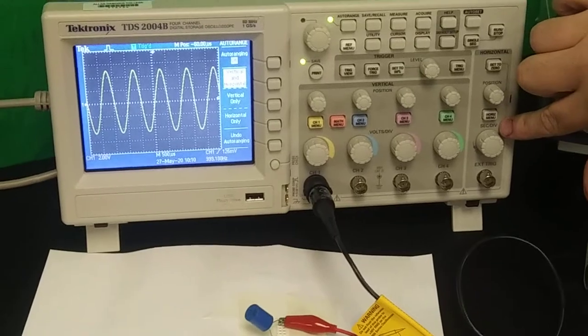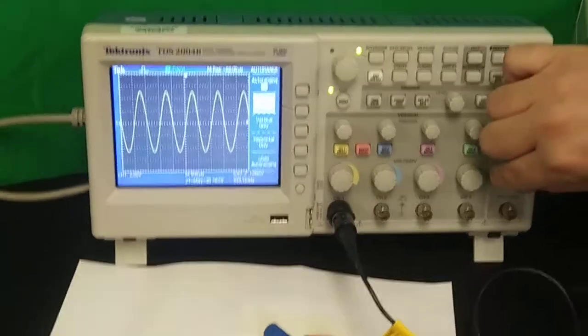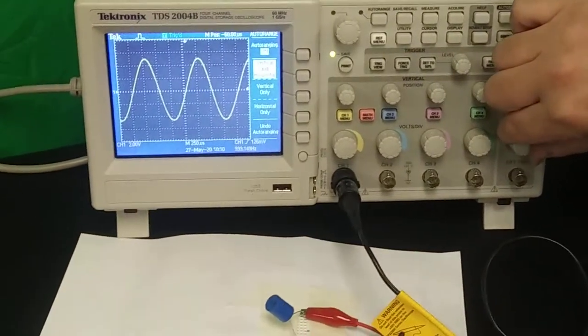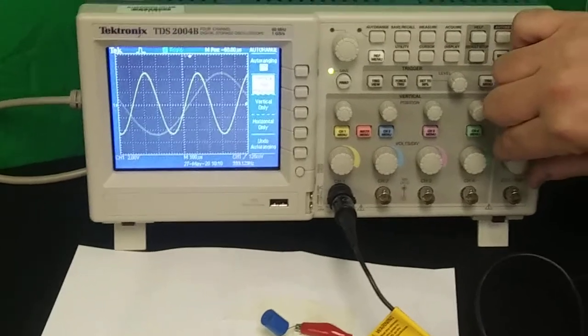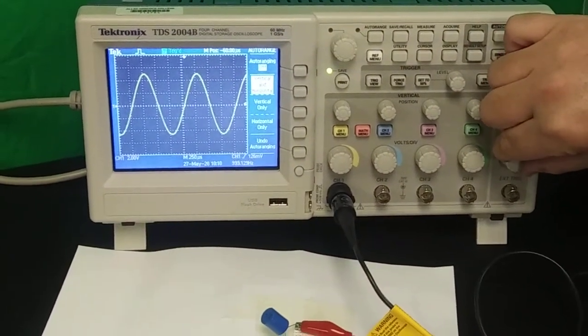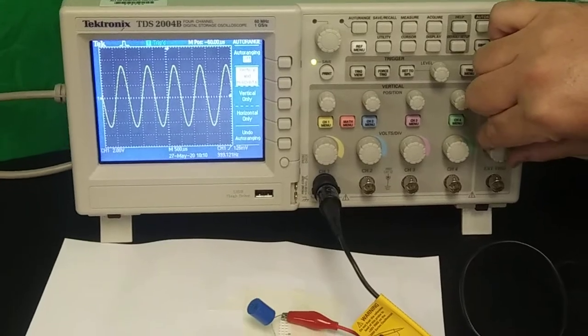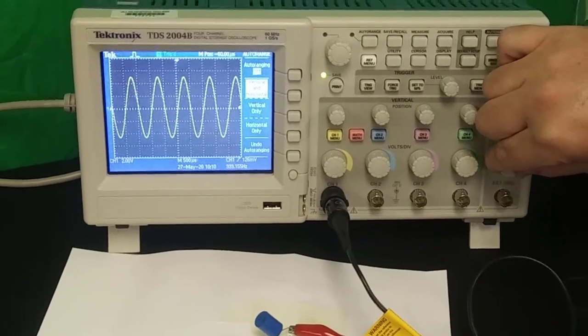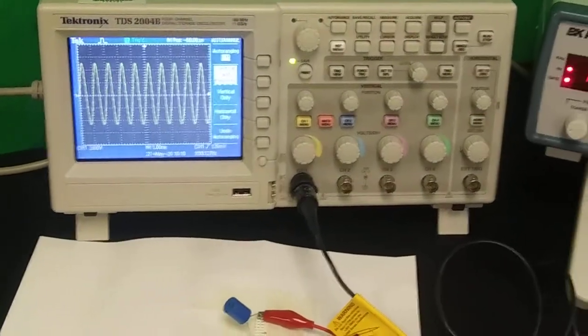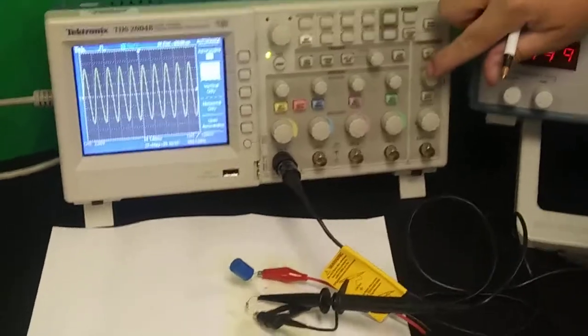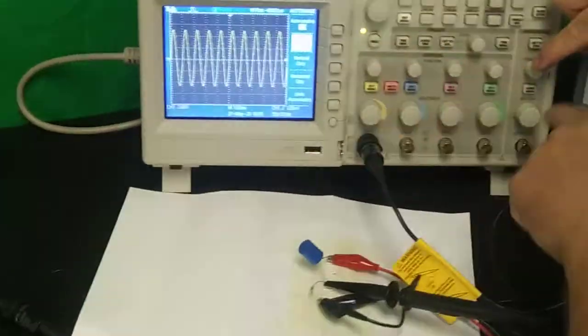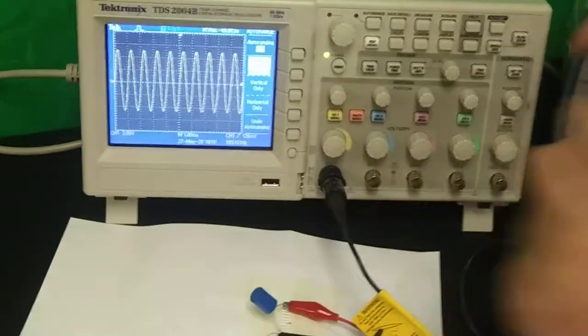They do subtle things. When I do the position, that's shifting this curve left to right. That shifts where the curve starts. So it's changing the start position. You could also think of this changing what the position is at the origin. Seconds per division changes the scale.